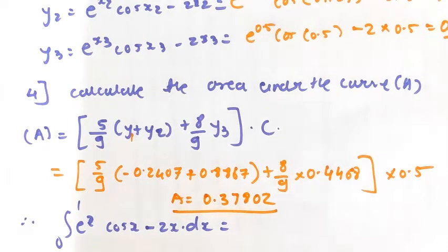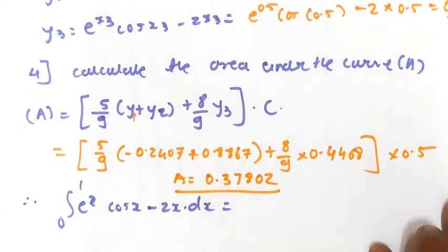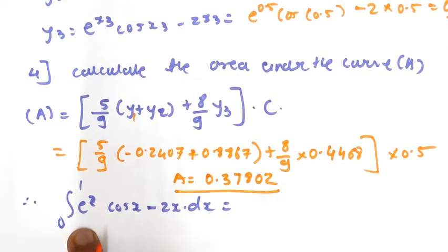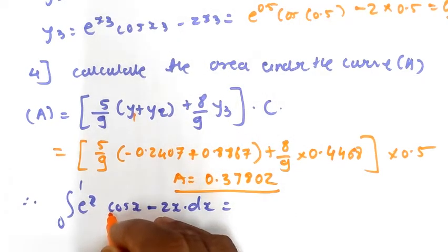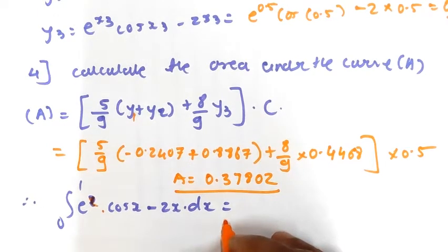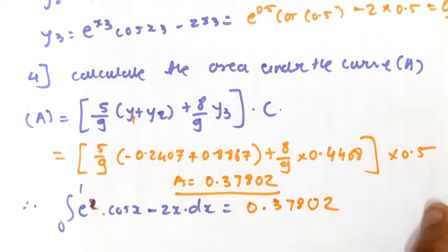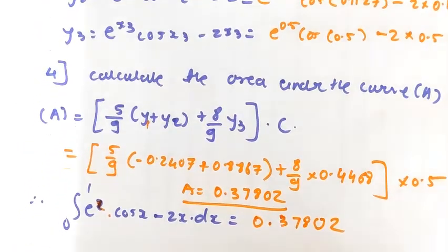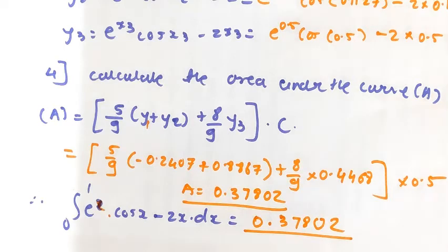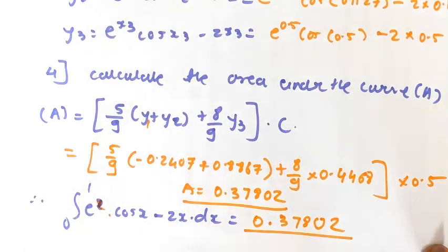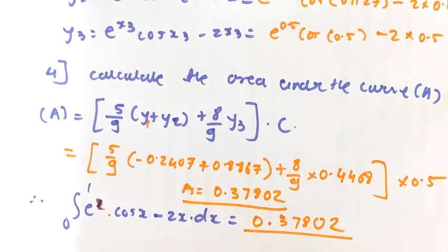So the value of the integral from 0 to 1 of e raised to x into cos x minus 2x dx is equal to 0.37802. This is the required value of the function by using the Gauss-Legendre 3-point formula. By using the Gauss-Legendre 3-point formula we are getting this answer. Note that if you solve the same numerical with another method, you will get a different answer. I hope you understood this numerical. Thank you for watching.